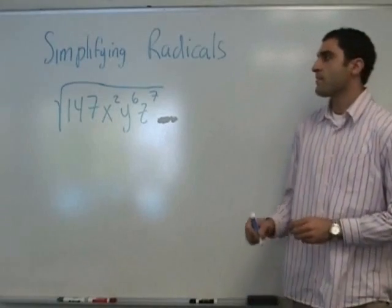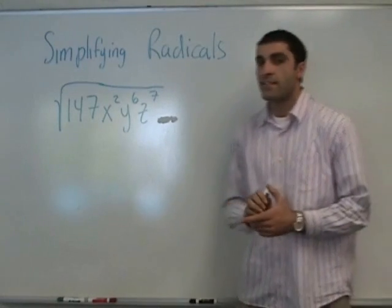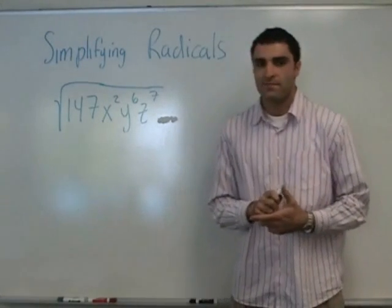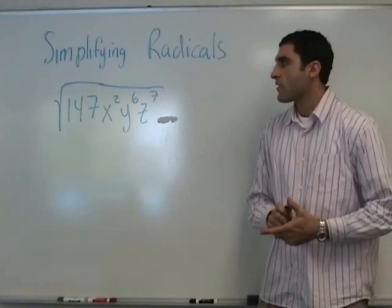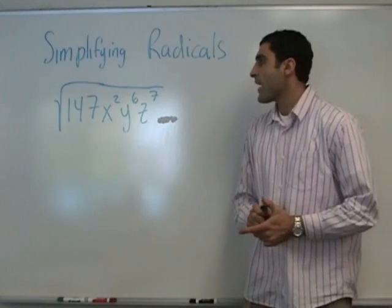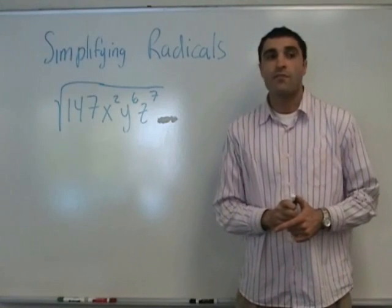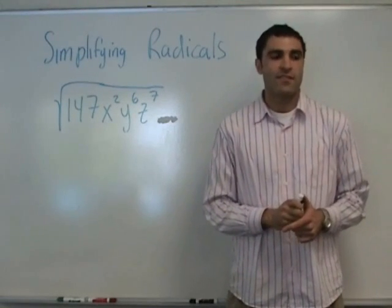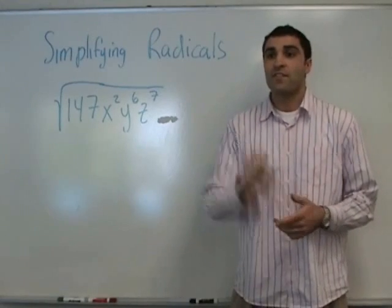Last time we talked about simplifying square roots. Now we're just going to take it to the next level. Are there any factors of 147 in which one of them is a perfect square?